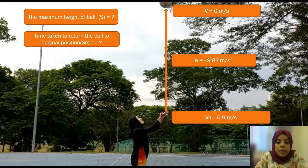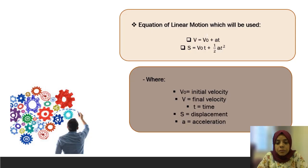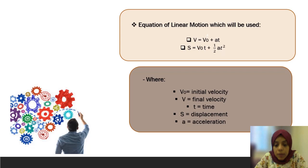The final velocity is equal to zero. Also, the acceleration is equal to negative gravity, which is negative 9.81 meter per second squared. These are two equations of linear motion we will use to find the time and the displacement. V0 indicates initial velocity, V indicates final velocity, T indicates time, S indicates displacement, and A indicates acceleration.